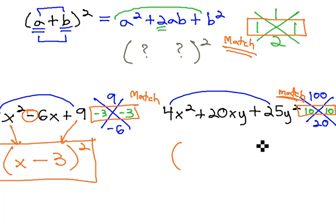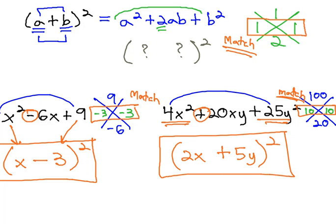When we have a match, we stop everything and say it's something squared. Taking the square root of 4x squared, we get 2x. The sign from the middle is plus, and the square root of the last term is 5y, and we factored our perfect square.